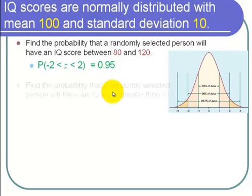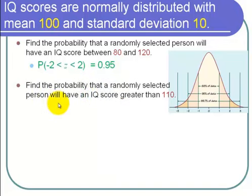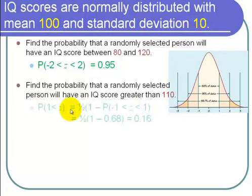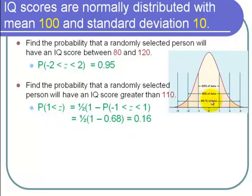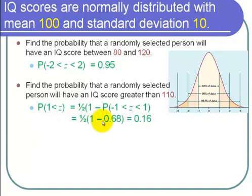Find the probability that a randomly selected person has an IQ score greater than 110. Notice 110 is one standard deviation above 100, so z = 1. We want P(z > 1). We know the area between negative 1 and 1 is 68%. Taking 1 minus 0.68 gives the left and right tails combined; dividing by 2 gives just the right side: one-half times (1 minus 0.68) ≈ 16%.